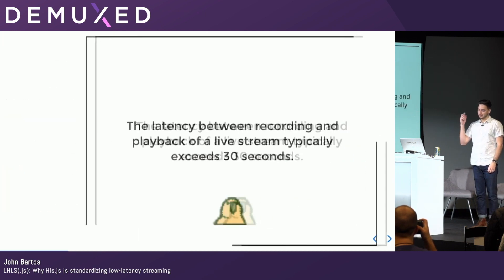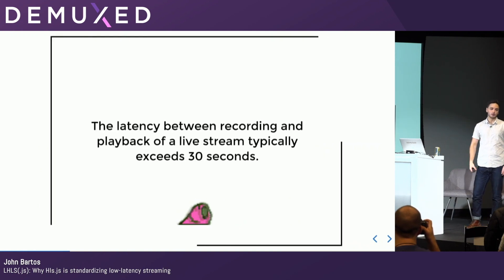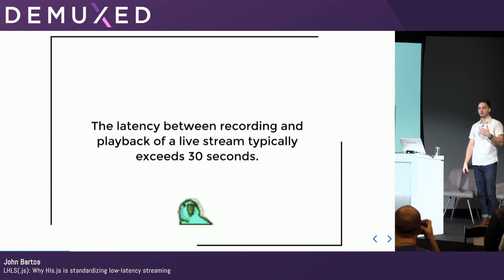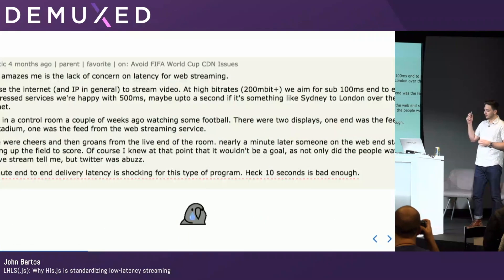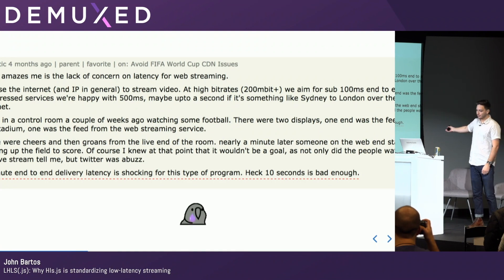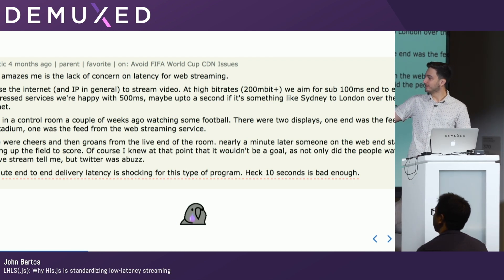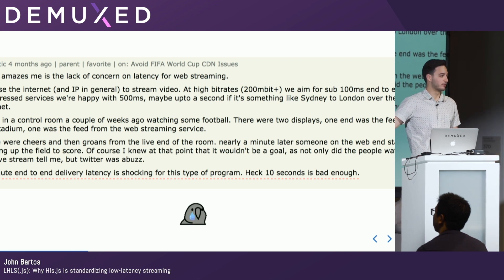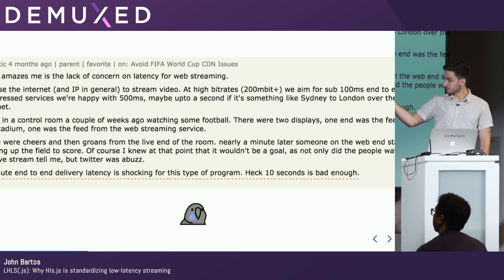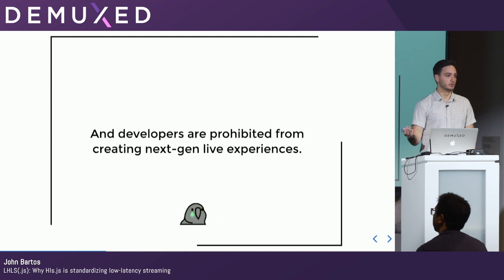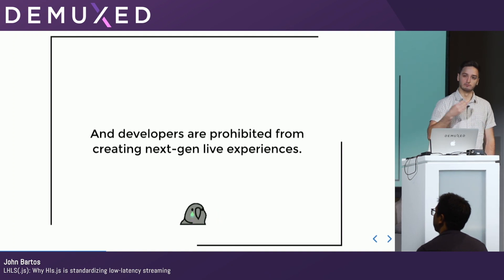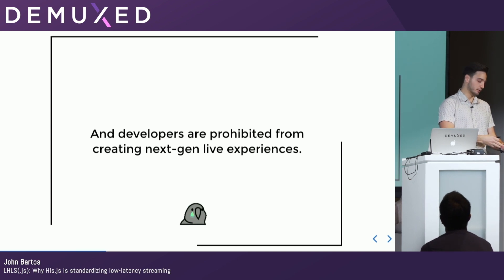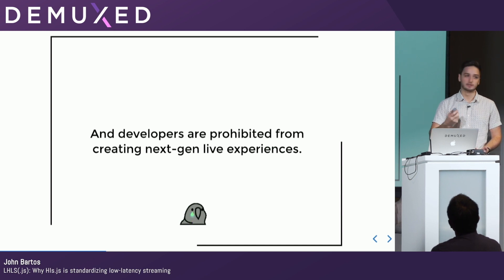Despite its popularity, HLS has a big problem, and that's with latency. The time between capturing a live stream and it showing up on a viewer's playback device is probably about 30 seconds plus today. Instead of just explaining why that's a problem, I'll show you a testimonial from some guy on Hacker News who says there's a lack of concern for latency, and that one minute is shocking, and 10 seconds is even bad enough. But there's also another problem in which developers who want to build better live experiences — things like second screen companion screens and live interactivity — really can't, because our current technology doesn't allow it.